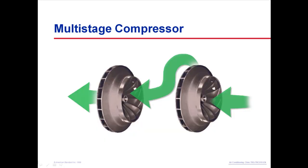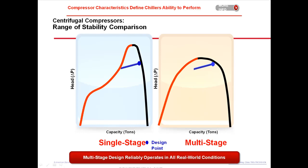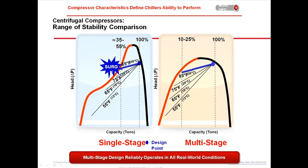Centrifugal compressors use one or more impellers to compress the refrigerant. A multi-stage compressor uses two or three impellers to increase the pressure of the refrigerant in steps instead of performing the task within a single impeller. Compressed refrigerant vapor travels from the outlet of the first-stage impeller to the inlet of the second-stage impeller. After the accelerated refrigerant vapor leaves the last impeller, it collects in the compressor volute and travels on to the condenser. This slide shows the comparison of single-stage and multi-stage compressors. As you can see on the right side, the multi-stage compressor has a wider range of loads and a bigger operating envelope, which allows the chiller to unload from 100% to 10–25% without surging and without using hot gas bypass.